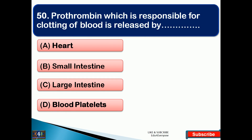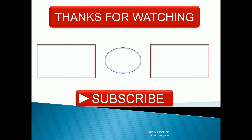The last question: prothrombin, which is responsible for clotting of blood, is released by — the right answer is option D, that is blood platelets. This is the end of the questions. Thanks for watching, and if you like the video please do subscribe and share with your friends. Thank you.